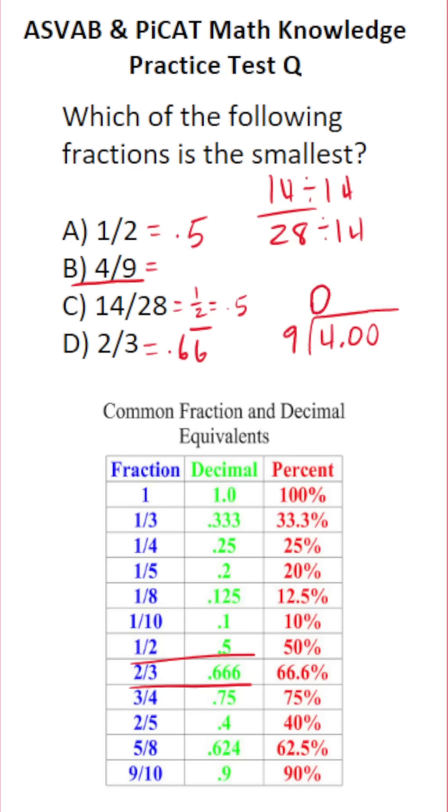So we're going to put a 0 over the 4 and we're going to bring up our decimal. Now the question is, how many times does 9 go into 40 without going over? 9 times 4 is 36. 9 times 5 is 45. So this is going to be 4. 9 times 4 is 36. 40 minus 36 is 4. Bring down this 0.